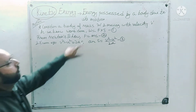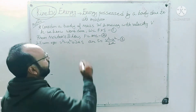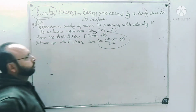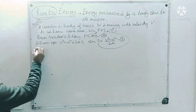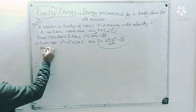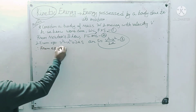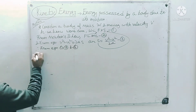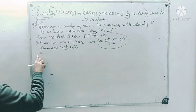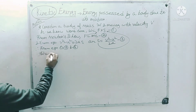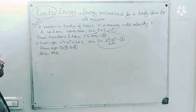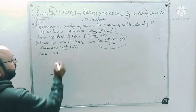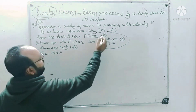Now it is clear that from equations 1, 2, and 3, I am going to put the value of F and s into the first equation. Substituting F = ma and s = (v² − u²) / 2a, we get work done equal to ½m(v² − u²).